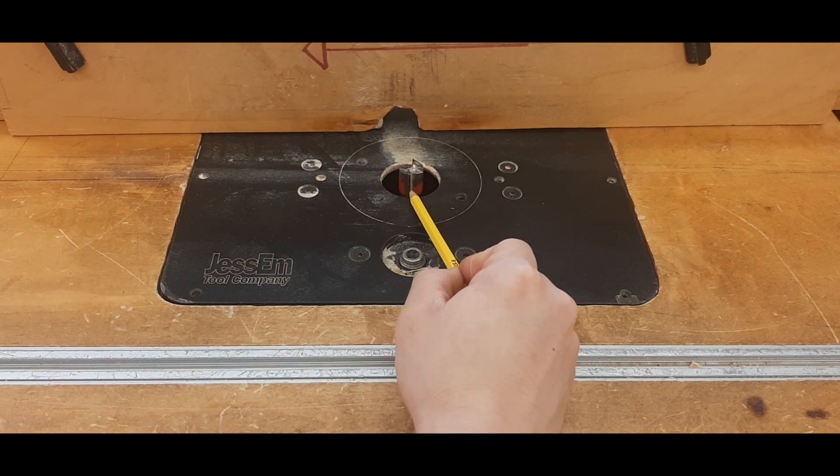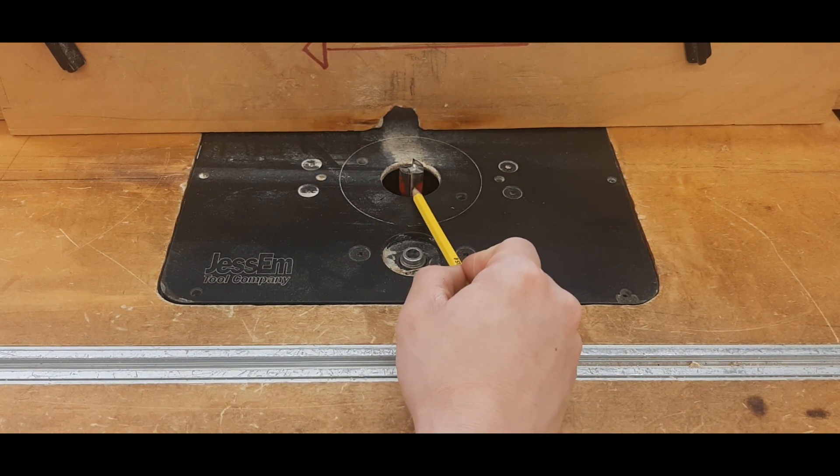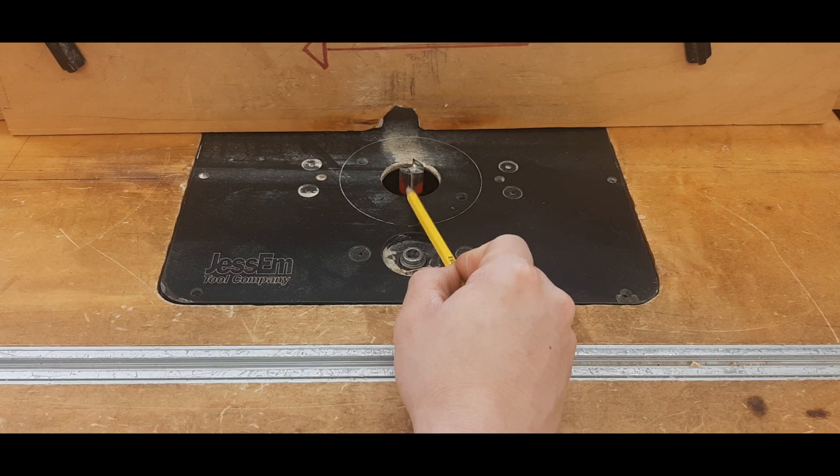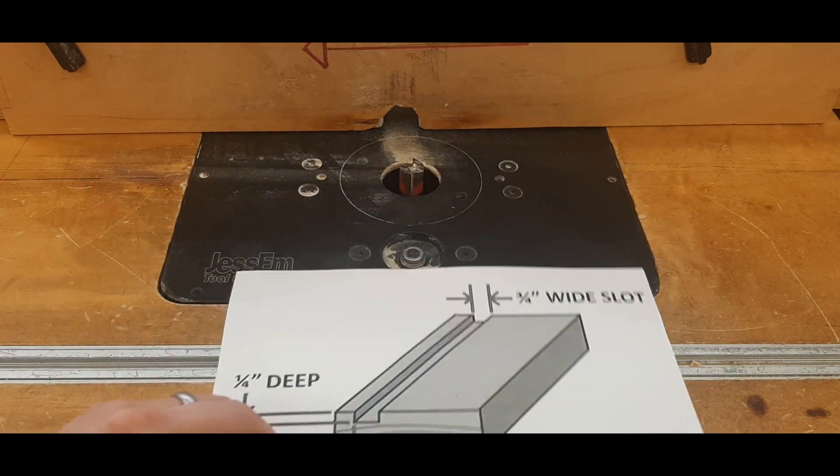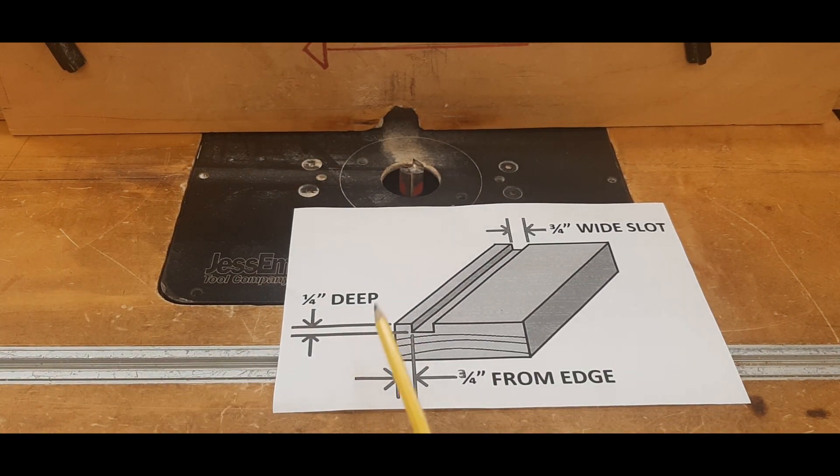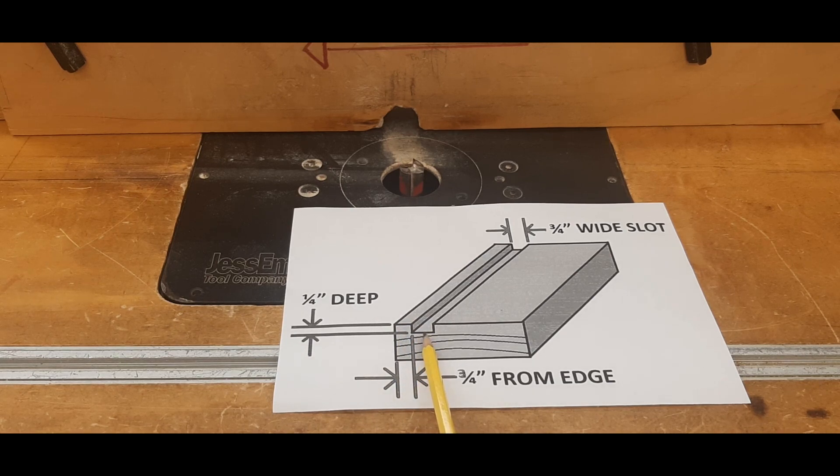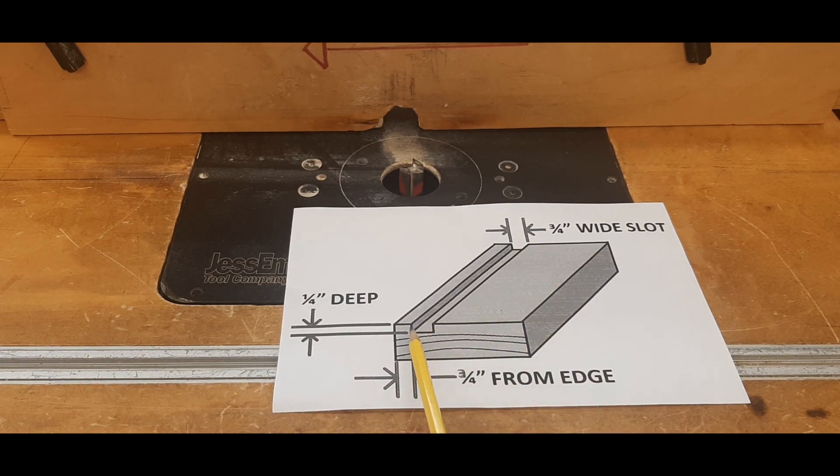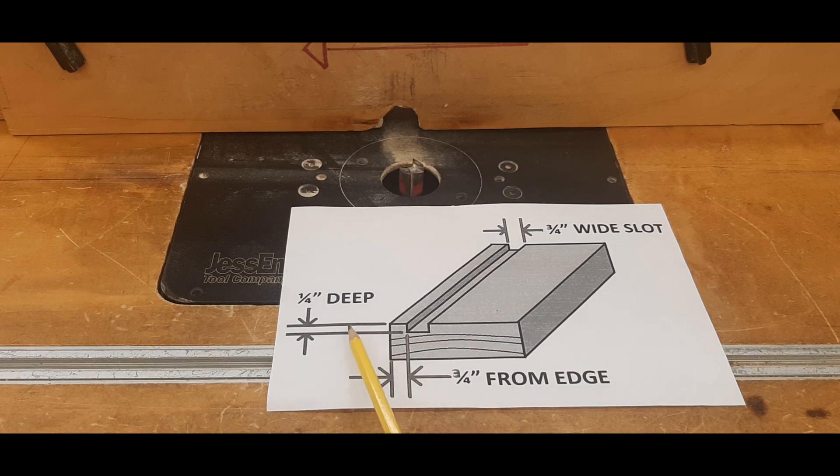Now the next step is to determine how much of this router bit should be sticking up from the table. To figure that number out, that's going to be dependent on how deep the slot is supposed to be. In this case, I want my groove to be a quarter inch deep.